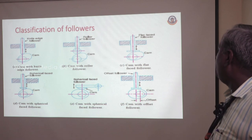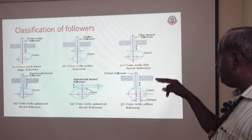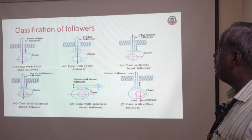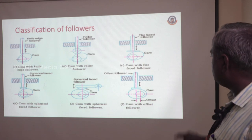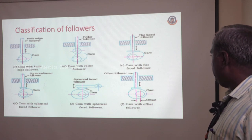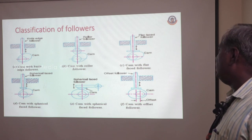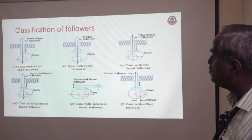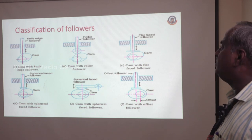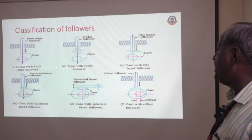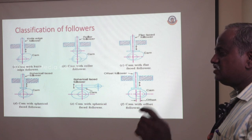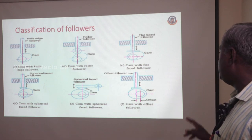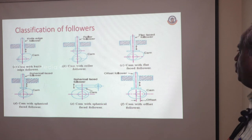The last type is the offset follower. Whatever followers we have seen from A to E, those are radial CAM or disc CAM. The difference is: if the axis of the CAM and axis of the follower fall on the same line, it is called a radial CAM. If the axis of the follower and axis of the CAM are different, then it is called an offset type of follower.